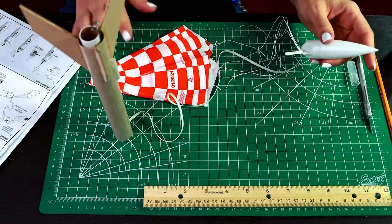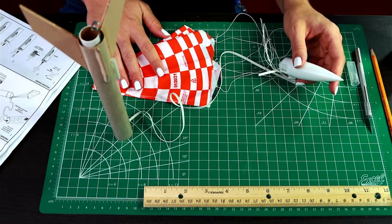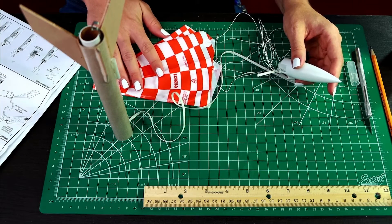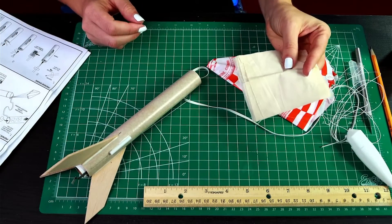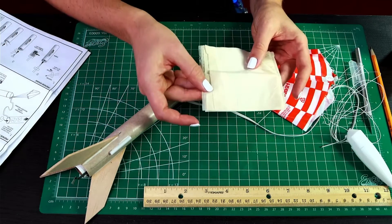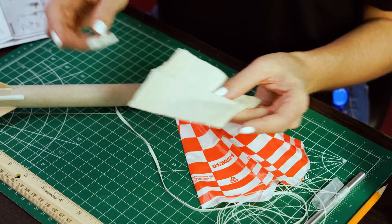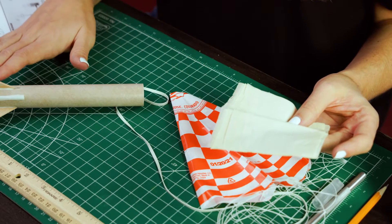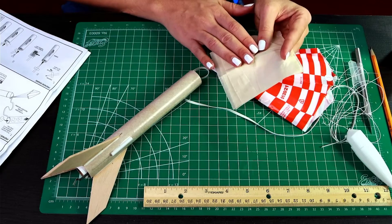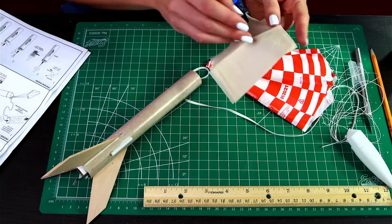And then we are going to prepare the rocket for flight with recovery wadding, and then fold our parachute in there. So recovery wadding is from Estes. It's fire-resistant tissue. It's really important for protecting the parachute from the gases from the engine. The instructions tell you how many sheets to use. For this one, we're using three to four.